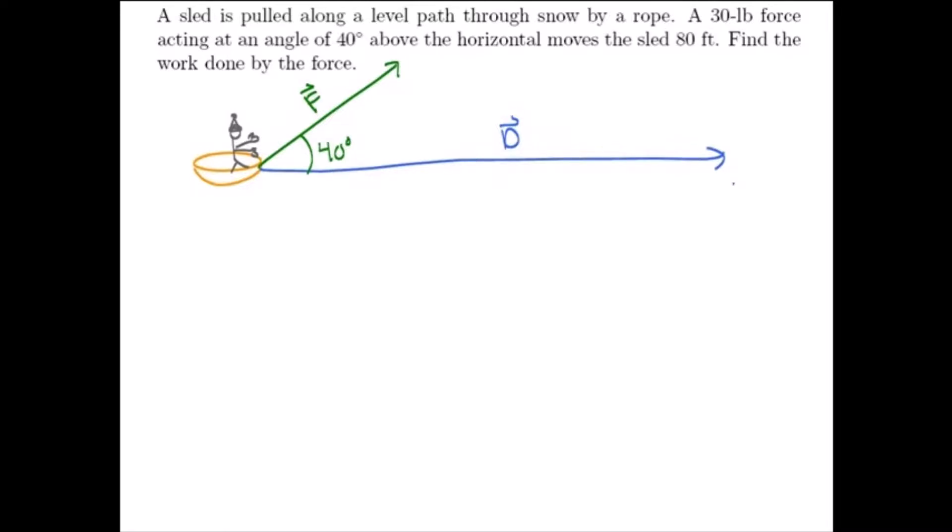And we want to know the work done by this force F to move this sled through this displacement vector D. Well, we know that the work is equal to the dot product of the force vector and the displacement vector. We don't have the force and displacement vector in terms of components, but we can use the other definition of the dot product, which says it's the magnitude of the two vectors multiplied together times the cosine of the angle between them, which in this case we're calling theta, that angle right there, which is 40 degrees.